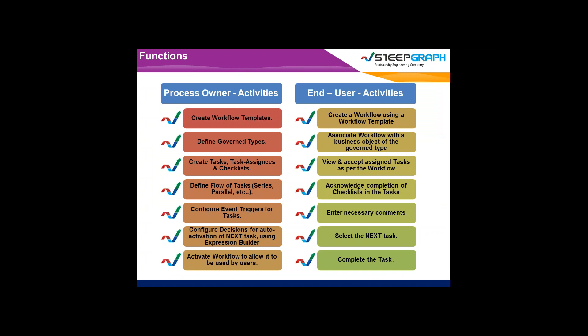When we look at the Workflow Toolkit, there are two distinct areas. One is the process owner who defines how the workflow should be — the definition of tasks and everything. Once the process owner makes the process available to users, users use the defined workflow and perform the set of activities assigned to them. There is a very clear distinction between the roles.